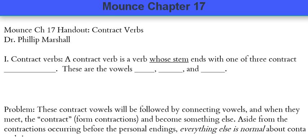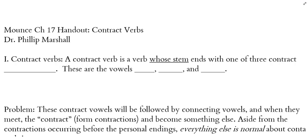Okay, so everybody has a handout for chapter 17? Very good. We are going to talk about contract verbs. The discussion that Mounce gives you is found beginning on page 139, so if you want to open your Mounce textbooks to 139 that would be terrific, so we can look back and forth. So what is a contract verb?